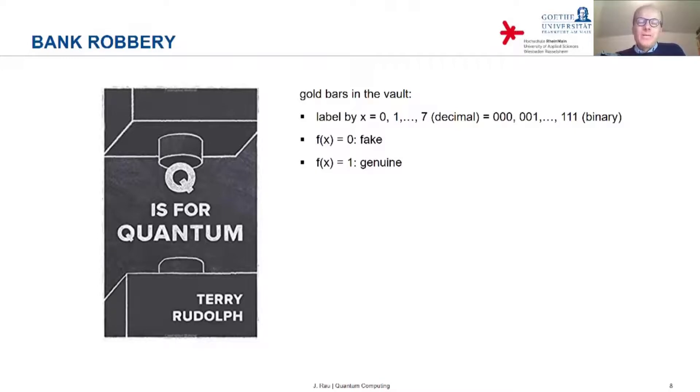So you have, in mathematical terms, you have a situation similar to the one that we just considered. You have a function, a binary function. If the input is, are the three bits that you use to label a gold bar, then this function maps a bit string of length three to a single output bit, zero or one. It indicates whether the bar is fake or genuine. And we know the function is either constant or balanced.